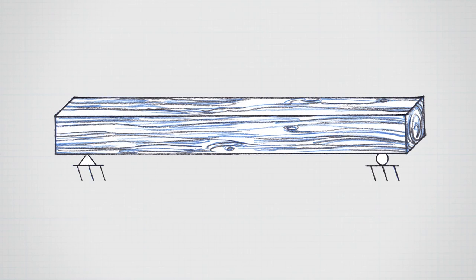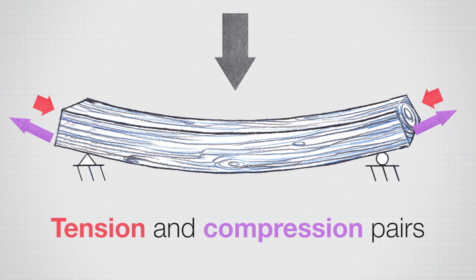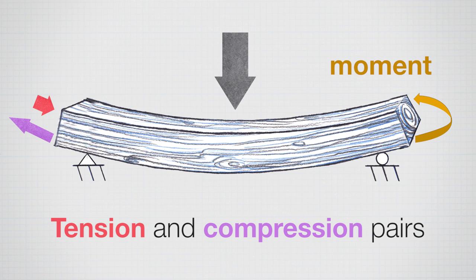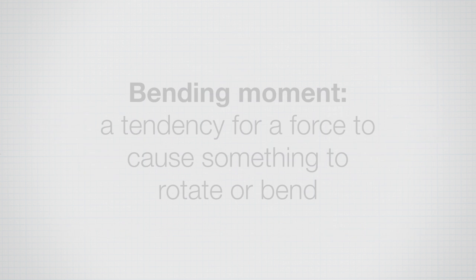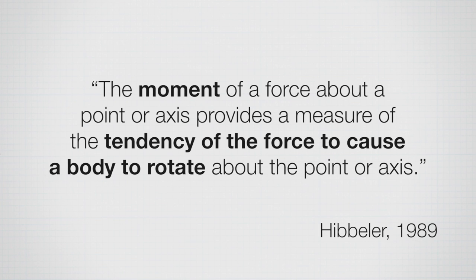As engineers, when I push on a beam, I get tension and compression — a tension pair and a compression pair. Those are typically equal and opposite, so we're in equilibrium, and they generate something called a moment, sometimes called a bending moment or a couple. A moment is the tendency of a force to cause something to rotate or bend. Hibbeler defines a moment as the force about a point or axis that provides a measure of the tendency of the force to cause the body to rotate.